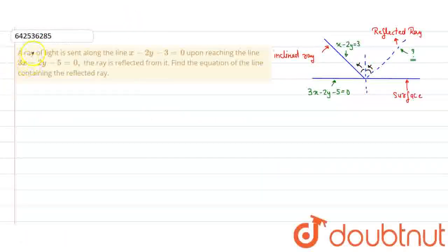So here is the question. A ray of light is sent along the line. Upon reaching the line, the ray is reflected from it. Find the equation of a line containing the reflected ray.